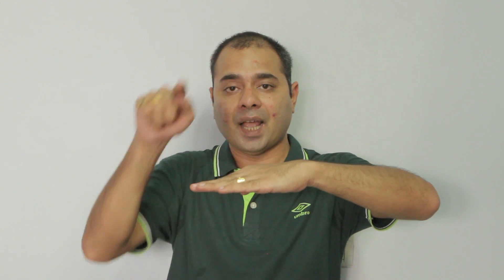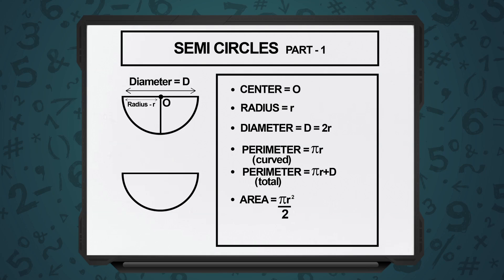The other variant that you can have is, you have the diameter standing over there and you have the half curved portion over there as well. Area will remain unchanged. It is going to be πr²/2 only. But now, if we say perimeter of the structure, the perimeter will be πr which is the circumference of the curved part plus the diameter 2r because this also comes into the picture.